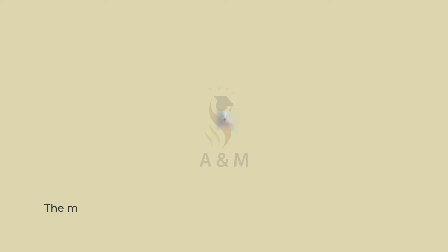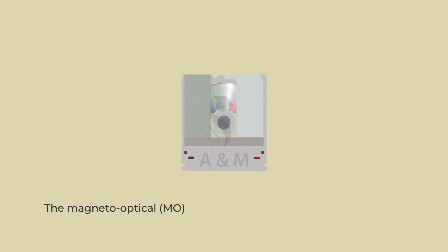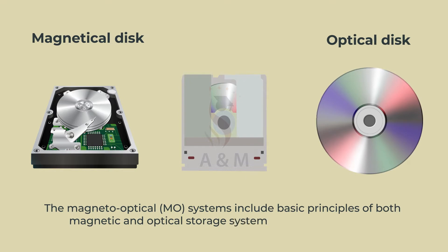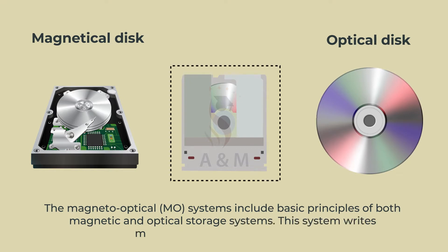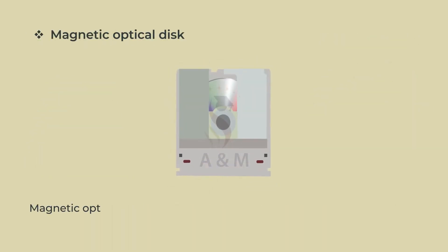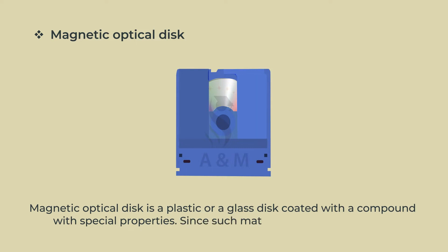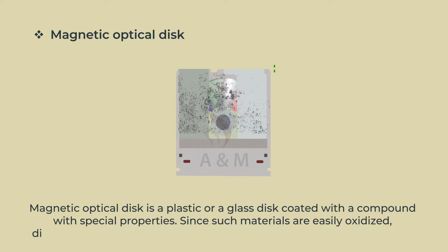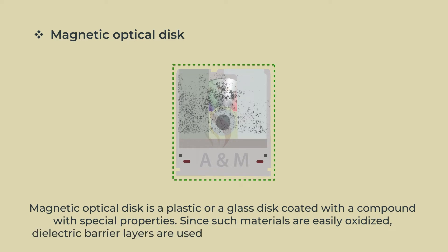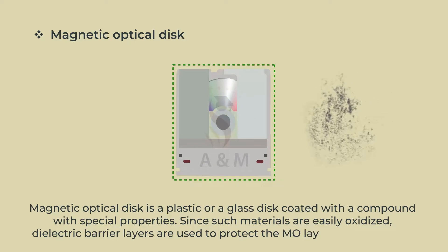The Magneto-Optical, i.e. MO, systems include basic principles of both magnetic and optical storage systems. This system writes magnetically and reads optically. A magneto-optical disk is a plastic or glass disk coated with a compound with special properties. Since such materials are easily oxidized, dielectric barrier layers are used to protect the MO layer from oxidation.